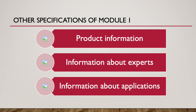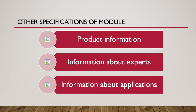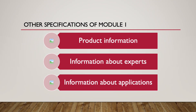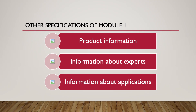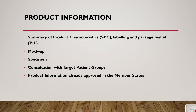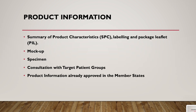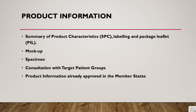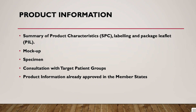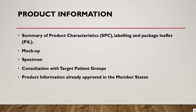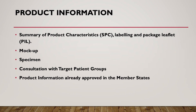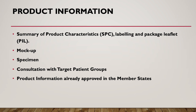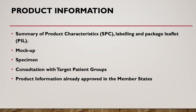Other specifications of Module 1 include: product information, information about experts, and information about applications. Product information includes the summary of product characteristics, SPC, labeling and package leaflet, PL, mockup, specimen, consultation with target patient groups, and product information already approved in the member states.